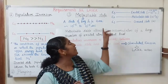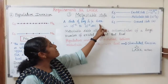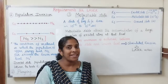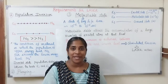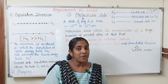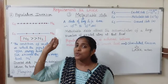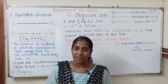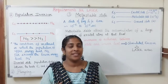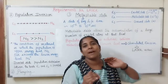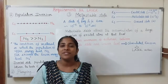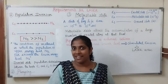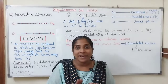The third requirement is the need for a metastable state. What is meant by metastable state? A metastable state is a state of long lifetime of the order of 10⁻⁶ to 10⁻³ seconds. Why is a metastable state required for laser action? For laser action, we require stimulated emission, and for stimulated emission, we first need population inversion. The lifetime of a normal excited state is of the order of 10⁻⁸ seconds (nanoseconds). After this time, atoms in the excited state will spontaneously return to the lower level, resulting in spontaneous emission. Spontaneous emission will not give laser action — for laser action, we require stimulated emission.